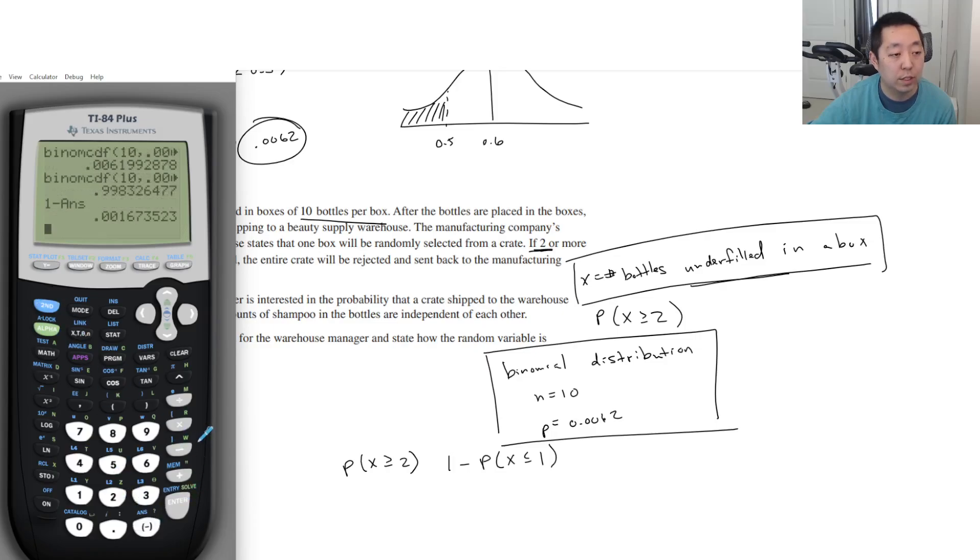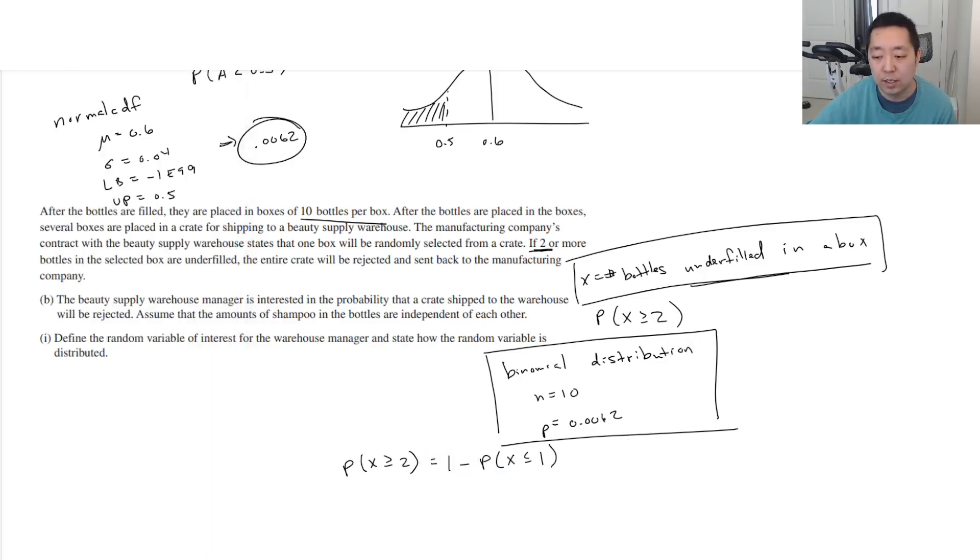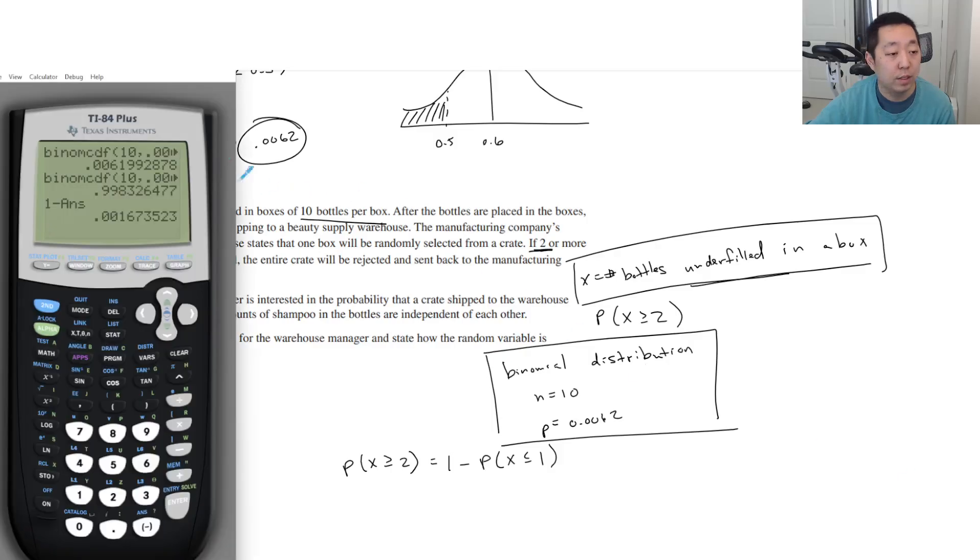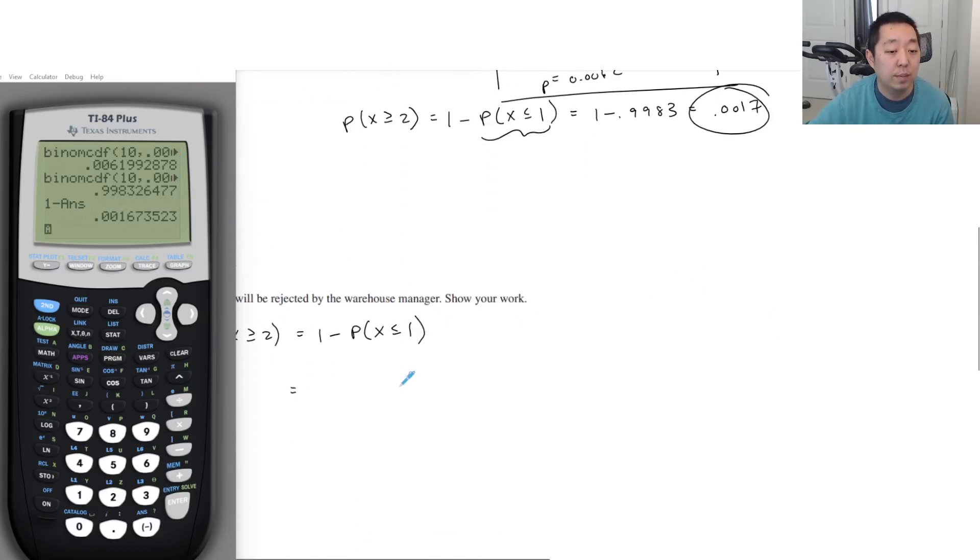I was going to say that it didn't really make sense. It should have been a really low probability because it's very unlikely that they're underfilled. So you want to do one minus that because the binomial CDF gives you this one here. So this is the binomial CDF, and I got one minus 0.9983, which gives me 0.0017. So that's the probability. I didn't write it down here: 0.0017.